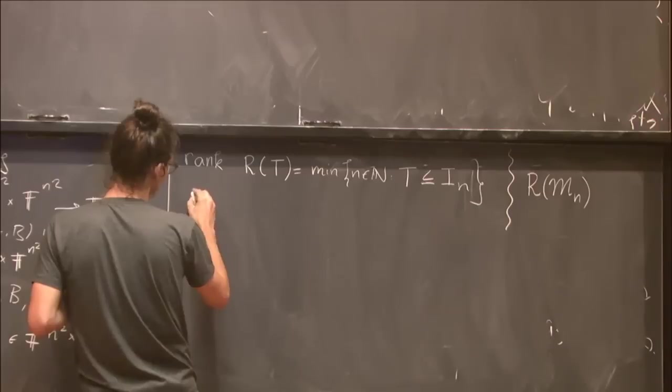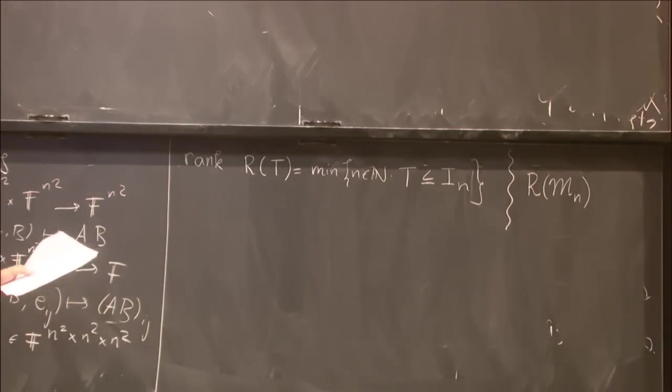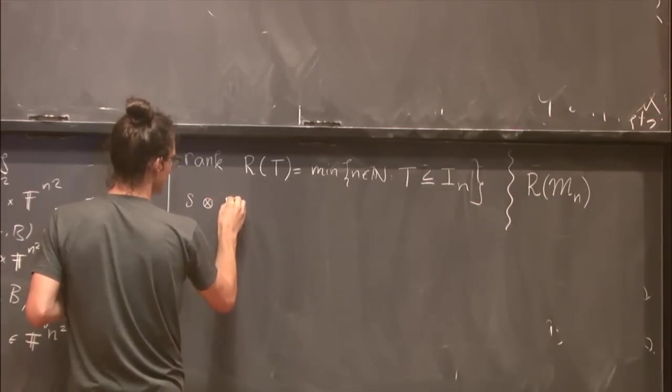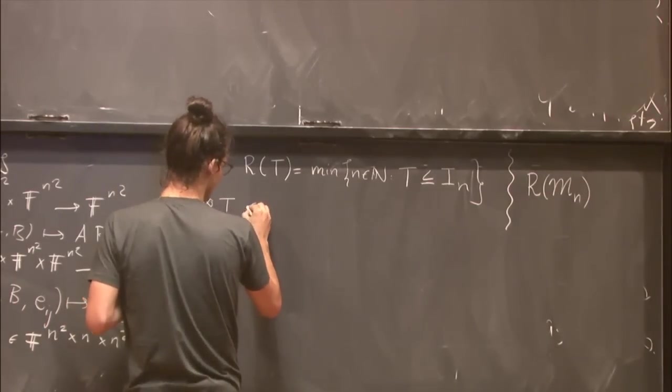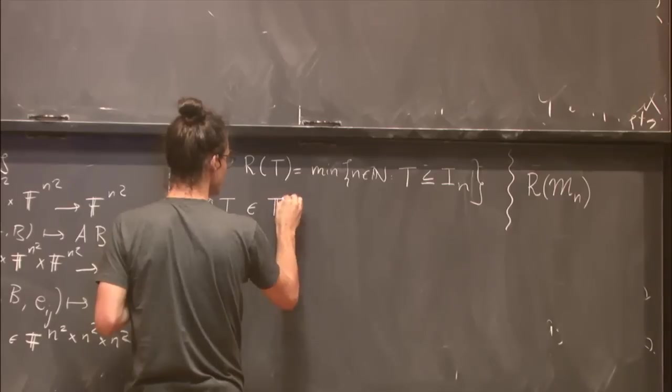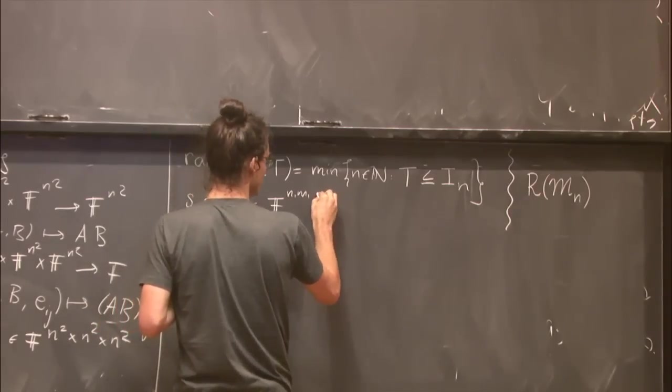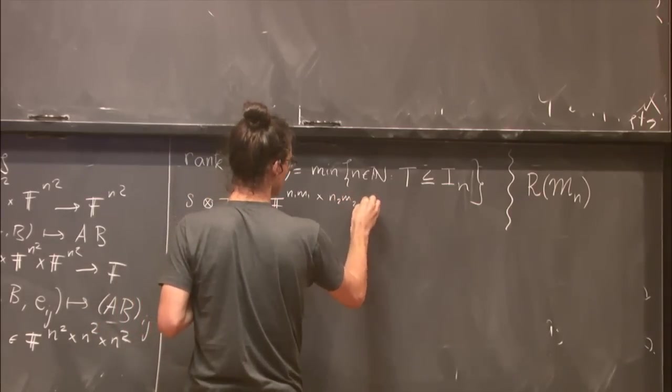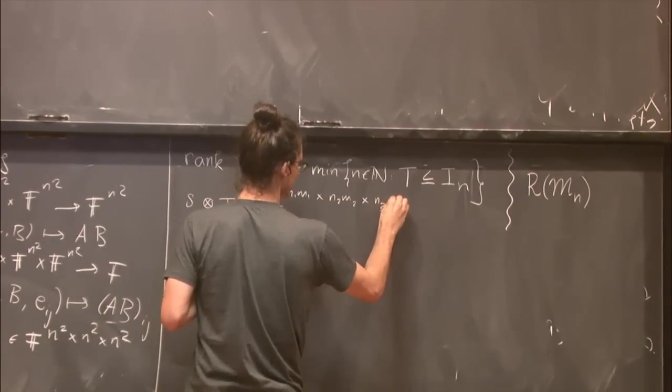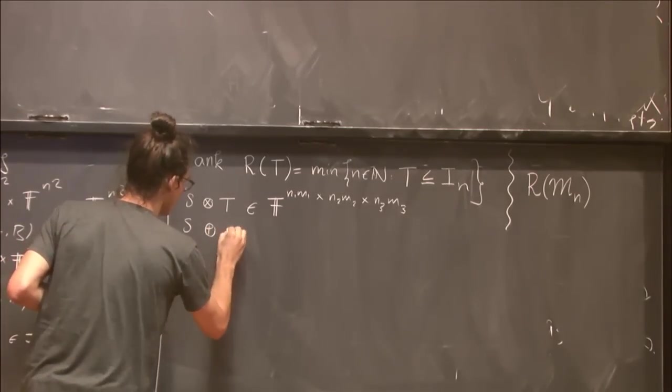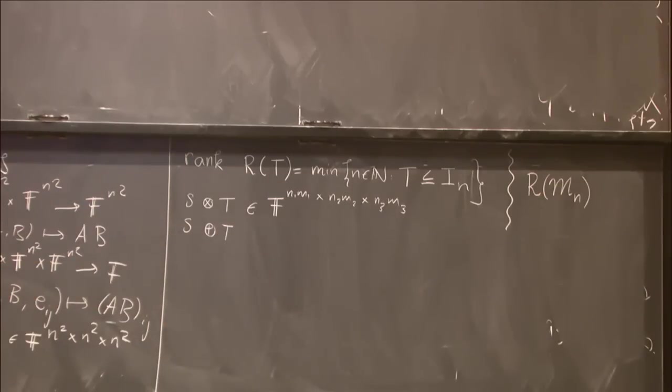So I said I'm talking about something asymptotic. So we haven't done anything asymptotic yet. For this, I first need a tensor product. So on tensors, you can define a Kronecker product. So S times T. You can do it canonically, so I will not write it down now. But it lives in this space. So I can multiply two tensors, and I have a new tensor. And similarly, you can define a direct sum, just putting your tensors next to each other, touching in a corner.